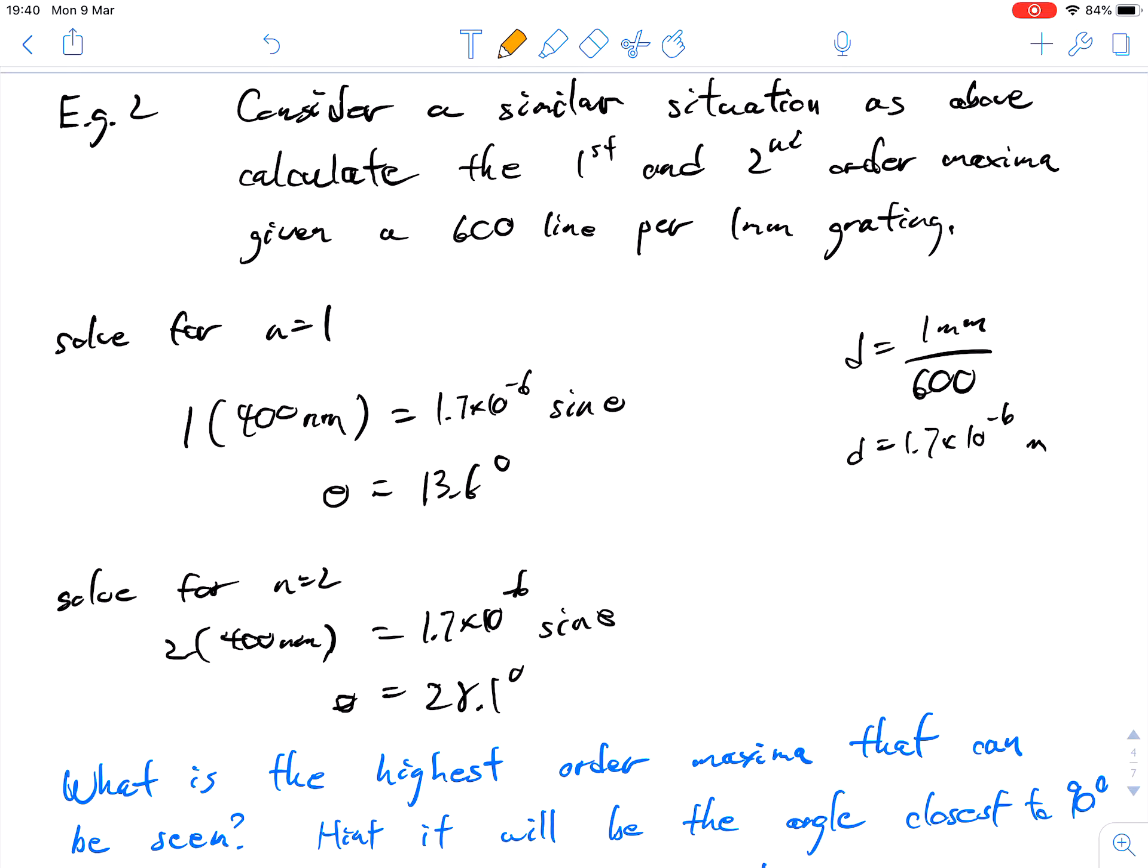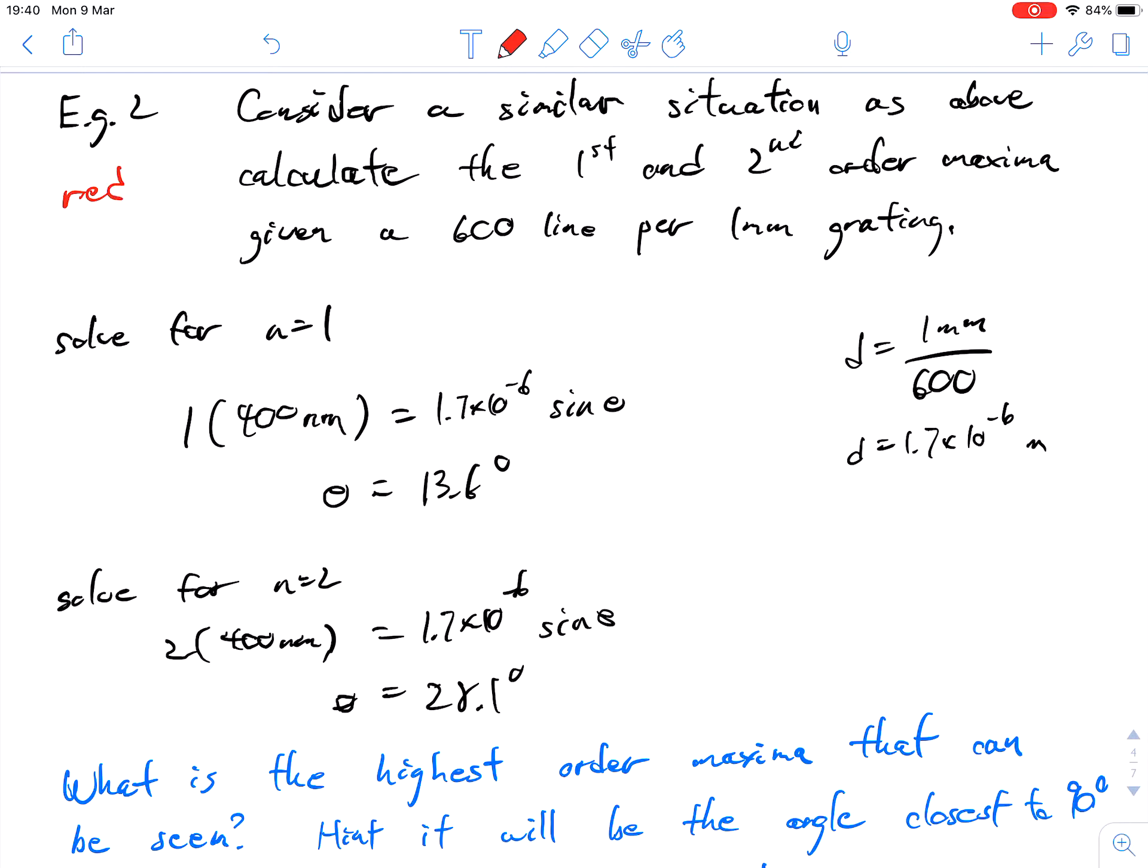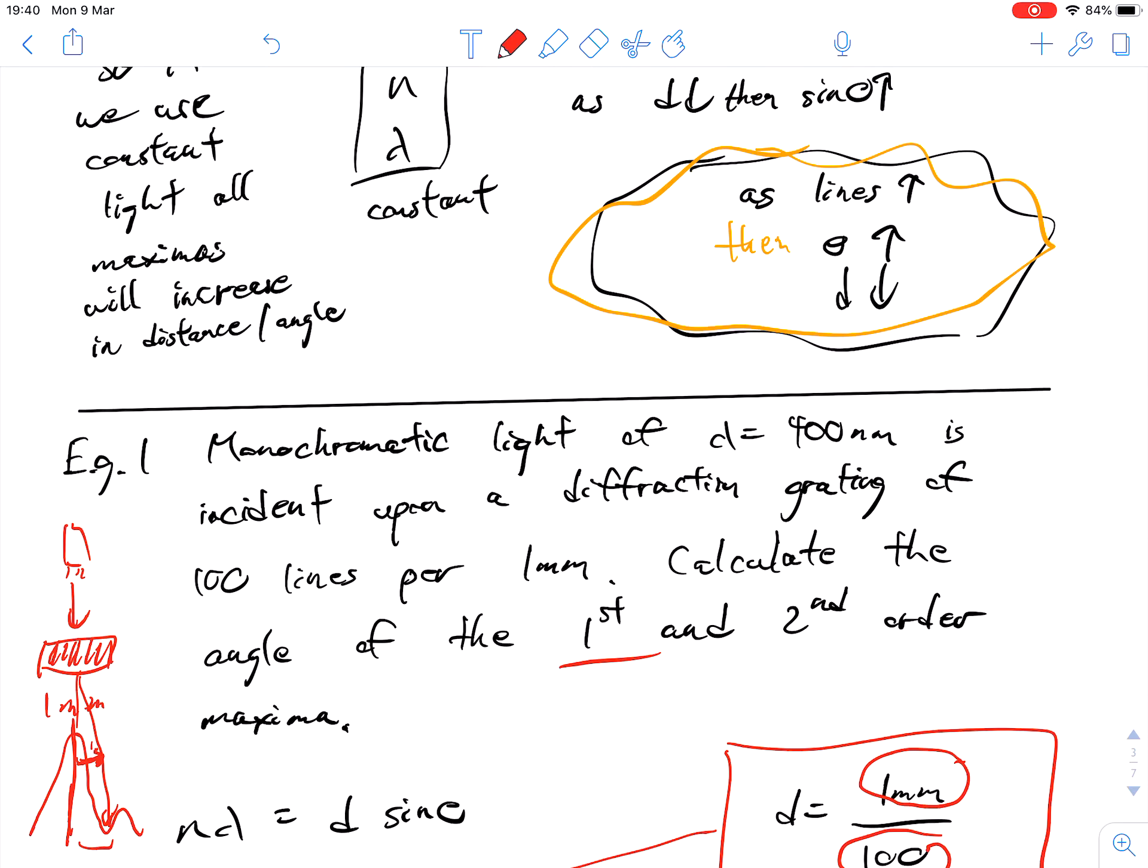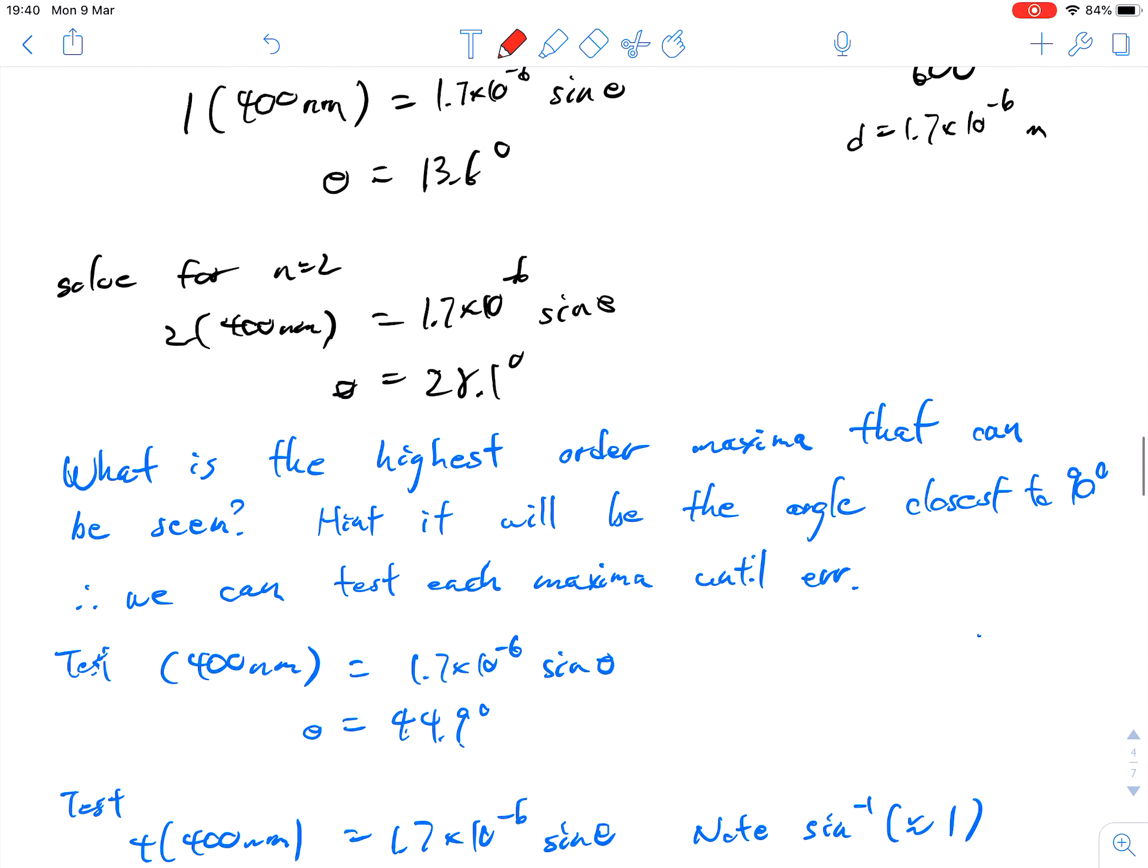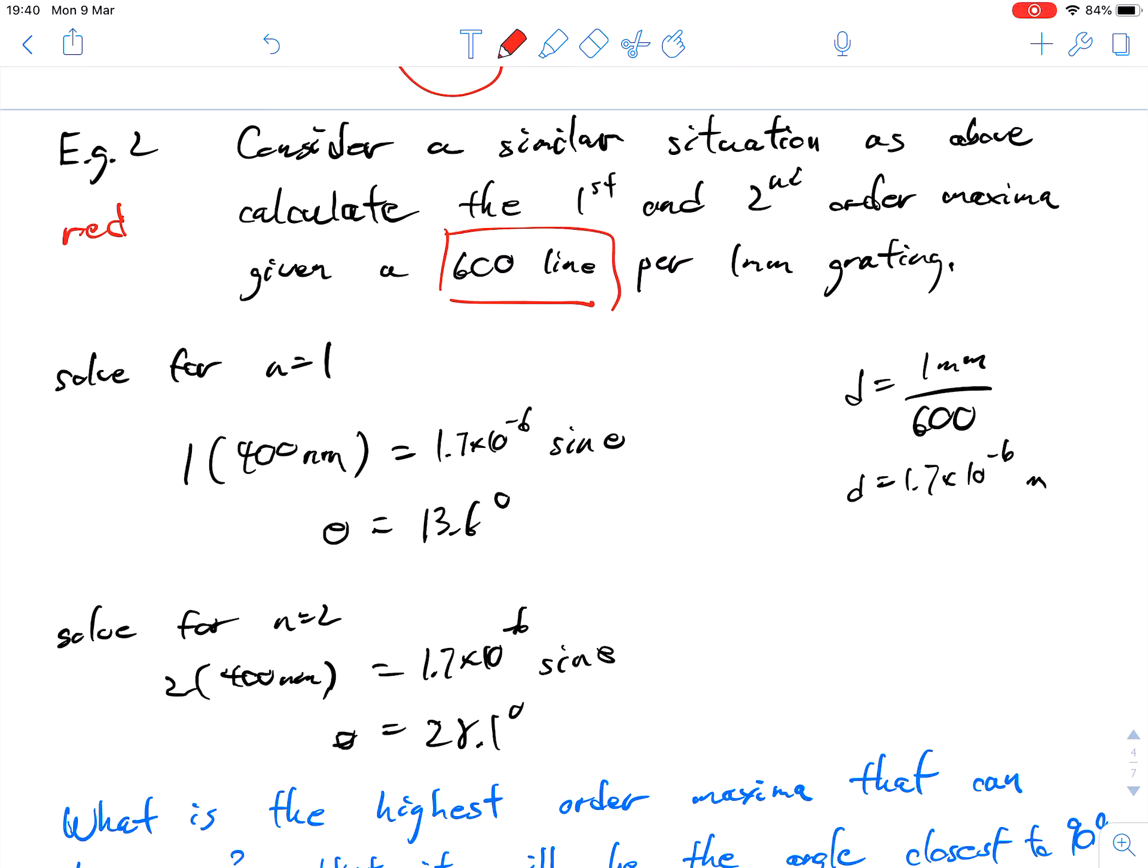Now let's compare that to a similar situation as above. We're still using red light, but we're not using the same number of lines - we're changing the number of lines. We're going to go with 600 lines this time. Remember what we mentioned earlier: increasing the number of lines is going to increase the angle for all the different maximas, and it's going to decrease the separation as well.